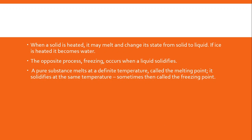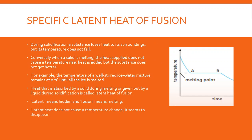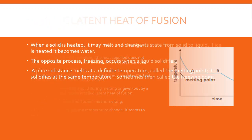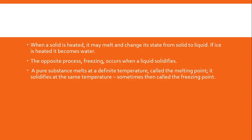There are some technicalities about how melting exactly happens — whether it occurs at one specific temperature or over a range of temperatures. The opposite process, freezing, occurs when a liquid solidifies. If we put a glass of water in a freezer for some hours, we expect it to turn into solid — that is freezing. A pure substance melts at a definite temperature called the melting point, and it solidifies at the same temperature, sometimes called the freezing point.